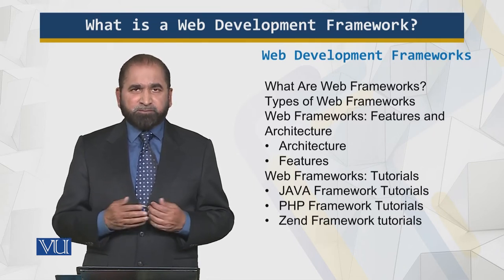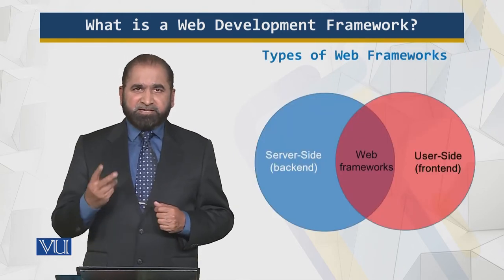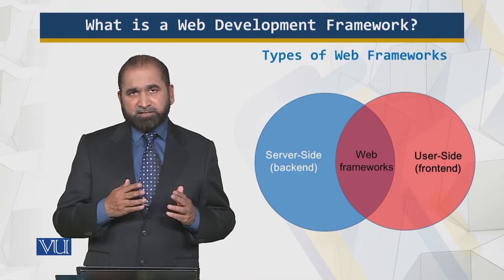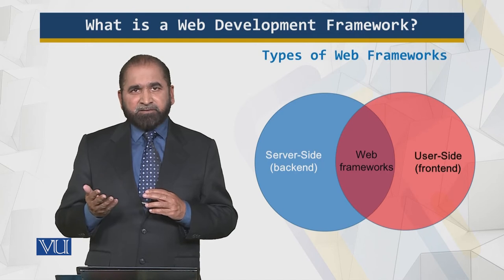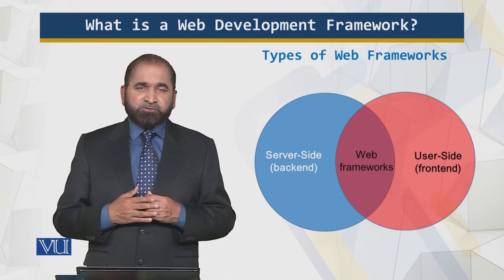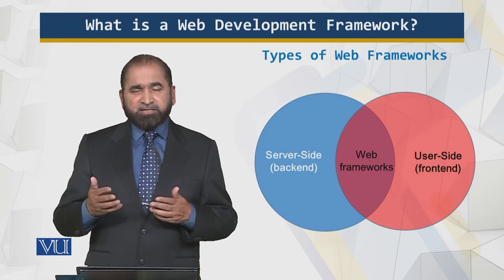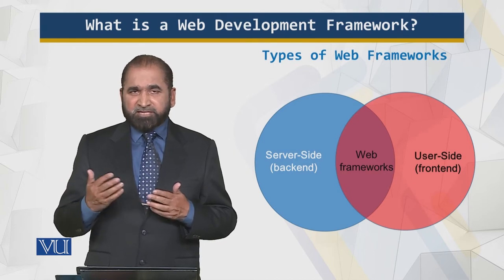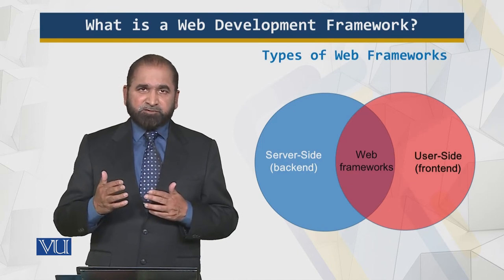There are two main types of web development frameworks: client-side and server-side. The server side is also called the back end, and the client side is called the front end. For the server-side framework, you can generate pages, and the business logic, security aspects, and database connectivity are all handled there.